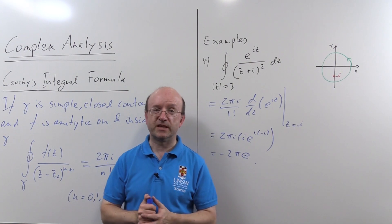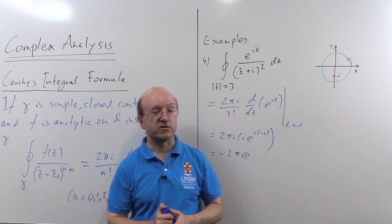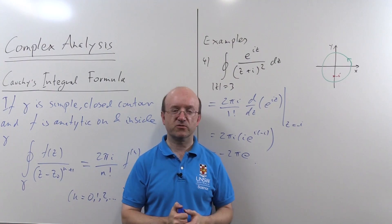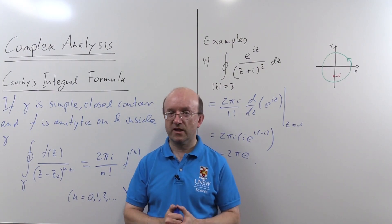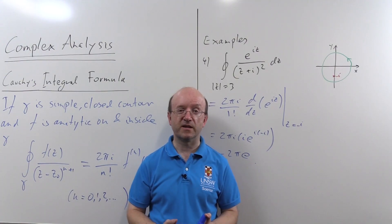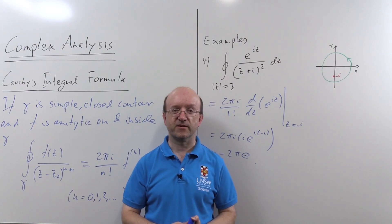So in each of these examples, we've calculated integrals that, well, technically we possibly could have done if we parametrized the contour. They were all circles, after all. But in the end, you see just how much easier it is to use the Cauchy integral formula. I've done four integrals without doing any integration whatsoever. Thank you.